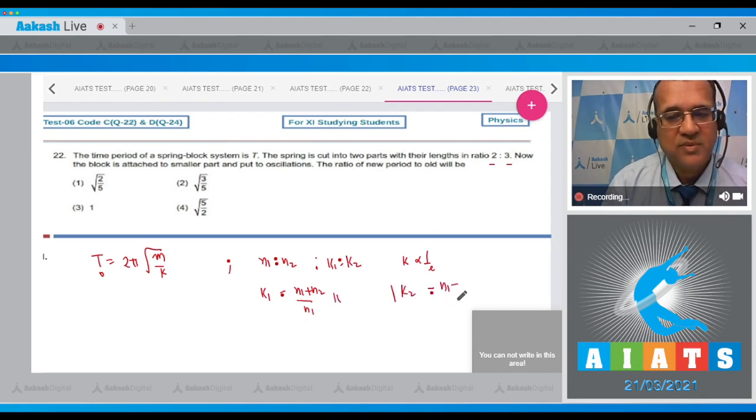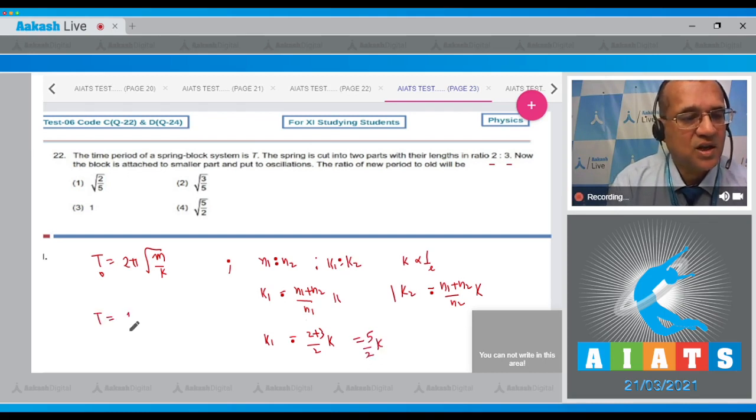The value of k1 is equal to (n1 plus n2) divided by n1 times the original k. Likewise, k2 equals (n1 plus n2) divided by n2 times original k. I need the shorter one, so therefore k1 is equal to (2 plus 3) divided by 2 times k, that is equal to 5/2 k.